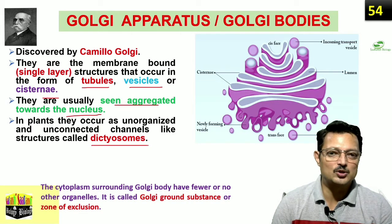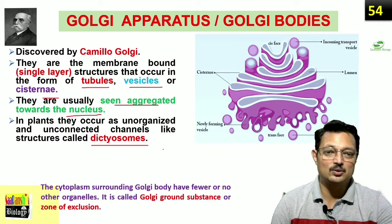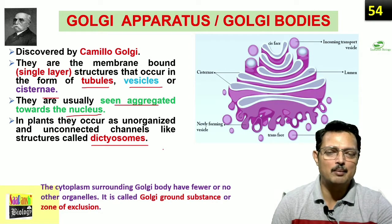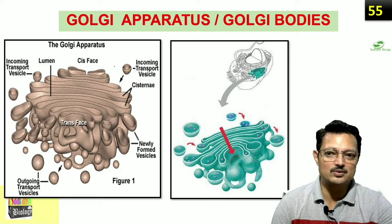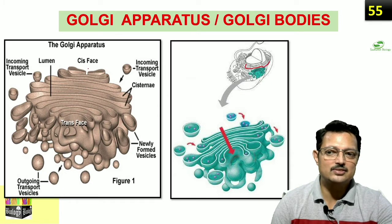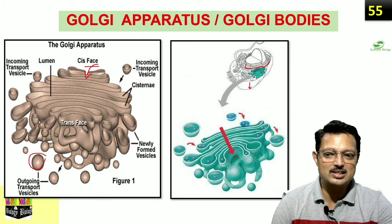Dictyosomes are also Golgi bodies but fragmented, unconnected, and found in plants — this is generally asked in MCQs. Golgi was discovered by Camillo Golgi and is called the Packager and Modifier of the Cell. If you look into it, you will find there are two faces: one is the convex face which faces the nucleus — that is called the cis face. The other face towards the cytoplasm, towards the plasma membrane, is concave — that is the trans face, the budding face. At the cis face material is received, it is modified, and from the trans face it is packed and delivered out.